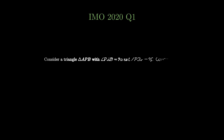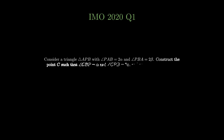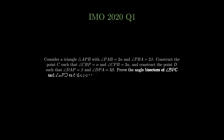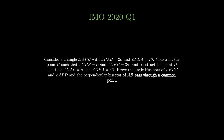Consider a triangle APB with angle PAB equal to 2α and angle PBA equal to 2β. Construct the point C such that angle CBP is equal to α and angle BPC is equal to 3α. Similarly, construct the point D such that angle DAP is equal to β and angle DPA is equal to 3β. Prove that the angle bisectors of angle BPC and angle APD, and the perpendicular bisector of AB pass through a common point.